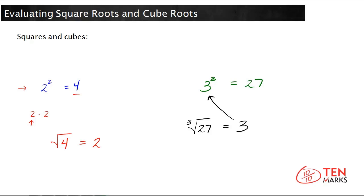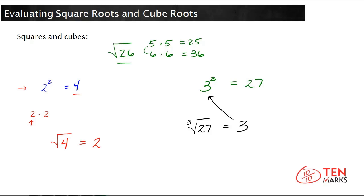Not every number is a perfect cube or a perfect square. For example, think about taking the square root of 26. You'd ask yourself: is there any whole number that I can multiply by itself 2 times to get a product of 26? The answer is no. The closest you can come is 5 times 5 equals 25, and the next whole number is 6, and 6 times 6 equals 36. So the square root of 26 will fall somewhere between 5 and 6, and your answer will be an irrational, non-terminating decimal.